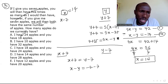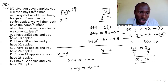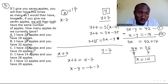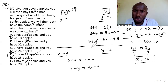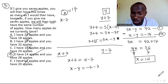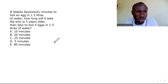Checking the options: option A says 24 — wrong. Option B says 10 — wrong. Option C says 18 — wrong. Option D says 14 — correct! You don't even need to find y because one answer suffices. The answer is D. Let's jump to the next question.